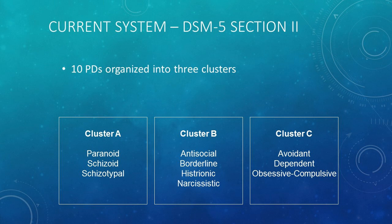The current system of personality disorders in the DSM is listed in Section 2, which contains the formal diagnoses. These personality disorders are identical to those that appeared in DSM-4. There are 10 personality disorders in total, organized into three thematic clusters: A, B, and C. Cluster A reflects personality disorders that are odd and eccentric — specifically, paranoid, schizoid, and schizotypal personality disorders.